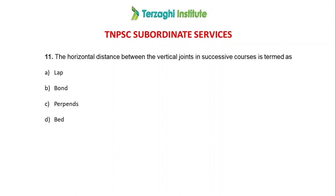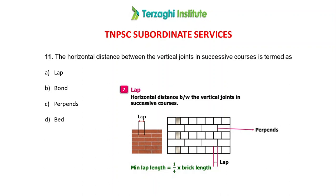Next question: a horizontal distance between vertical joints in successive courses is called what? Options are Lap, Bond, Serpent, and Bed. In a brick wall, we have stretcher rows and header rows. The headers have two vertical edges. The horizontal distance between those vertical joints is called the Lap. The answer is Lap.